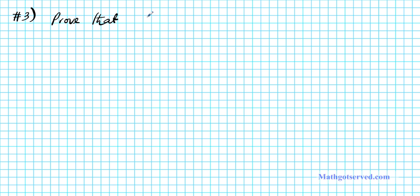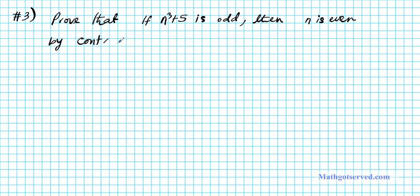Alright, so let's write down problem number three. Prove that if n to the third plus five is odd, then n is even. We're going to prove this by both contradiction and contraposition.